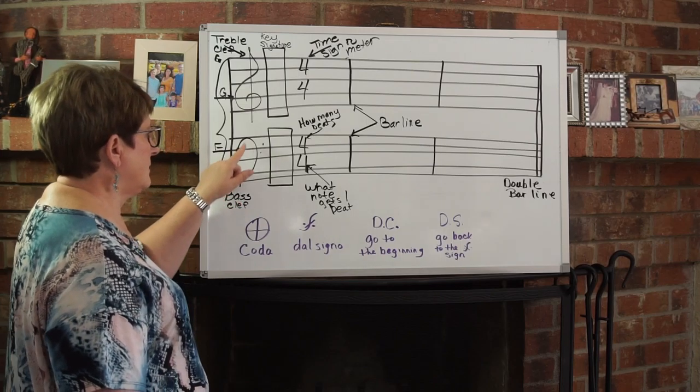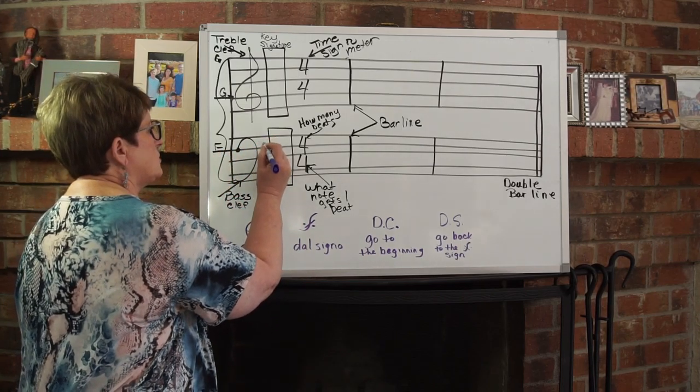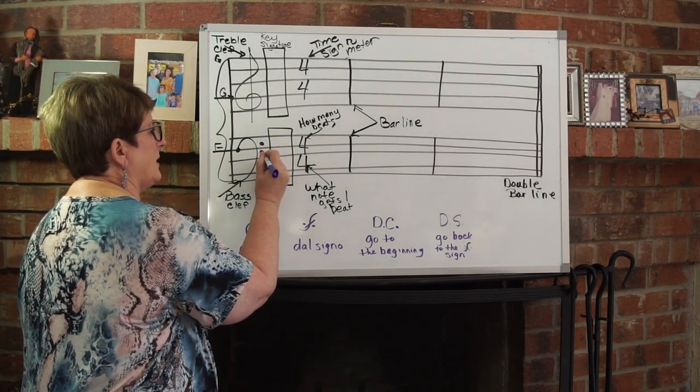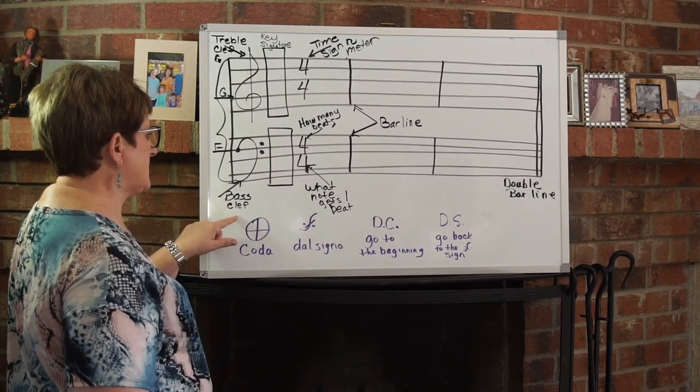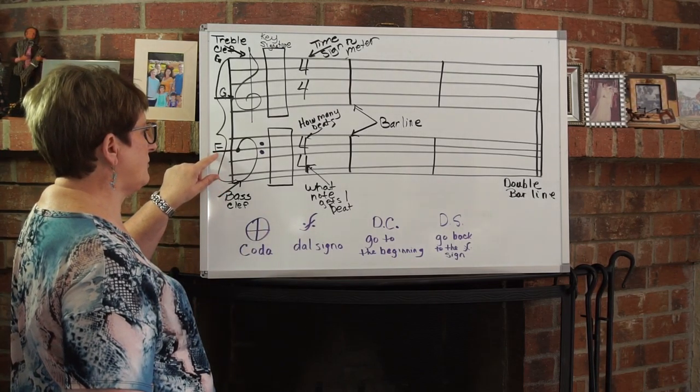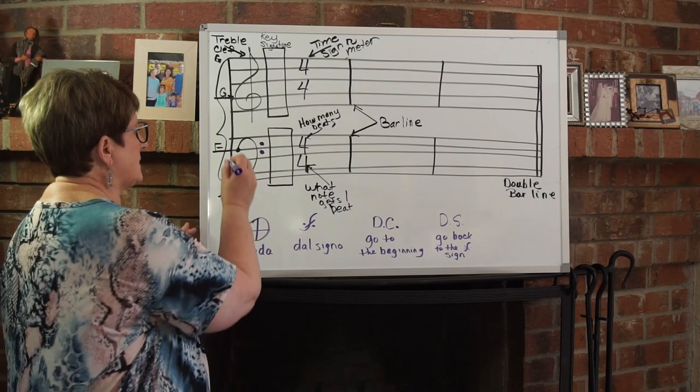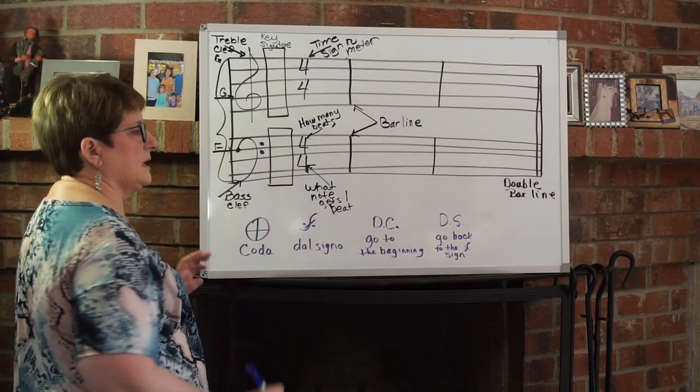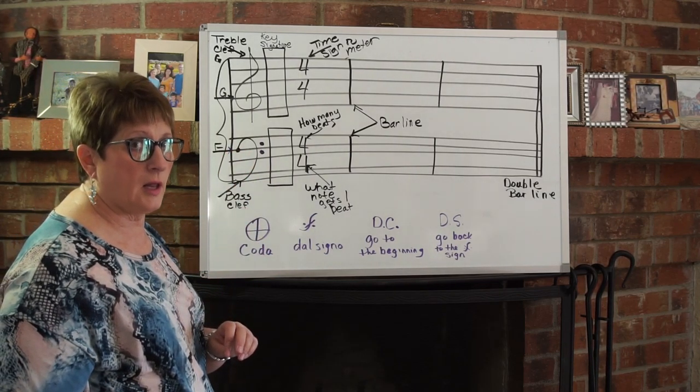In the bass clef, this backward C, these two dots always go around the F line. So this is a bass clef but it's also known as the F clef because it leads us to the F line once again when we're trying to figure out our lines and spaces.